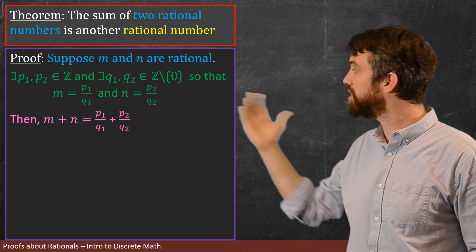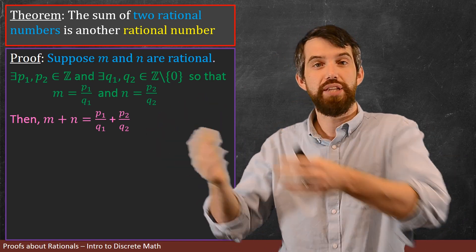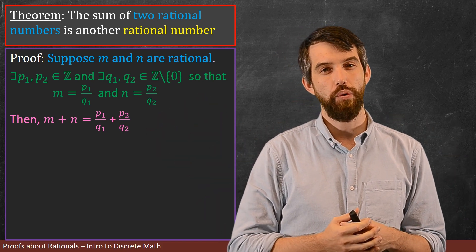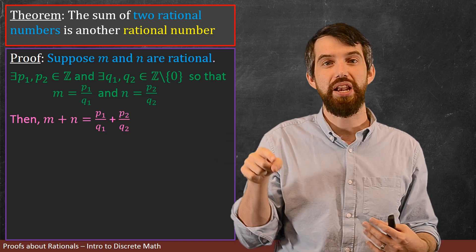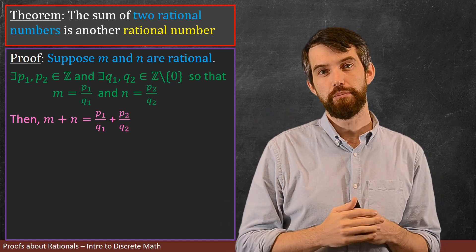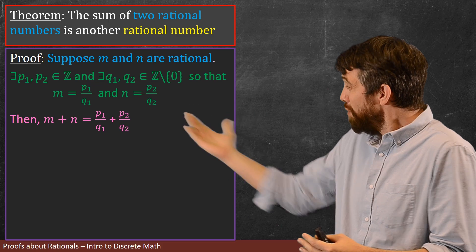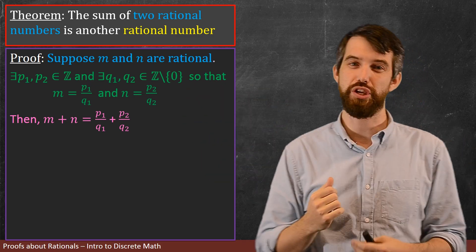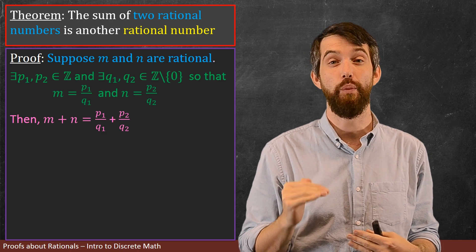Let me go and put up what the sum of m plus n is. Well, it's the one fraction plus the other fraction. Now, where am I going? My goal is that this sum, this m plus n, is in fact a quotient. That's what I want to have. So if this is a quotient, how can I make p1 over q1 plus p2 over q2 look like just a quotient of one thing on the top, one thing on the bottom?